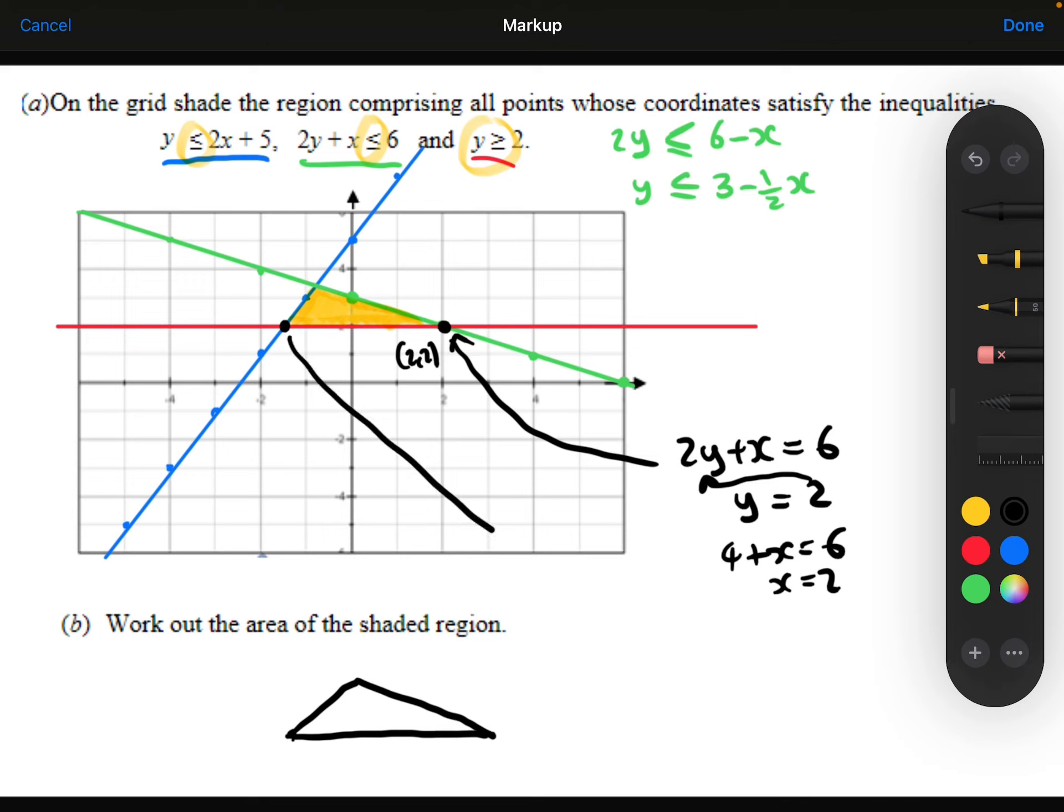Now let's focus on this coordinate over here. So that's where the blue line intersects with the red line. So solving those simultaneously, I get 2 equals 2x plus 5. So x is minus 1.5, so this is the coordinate (-1.5, 2).